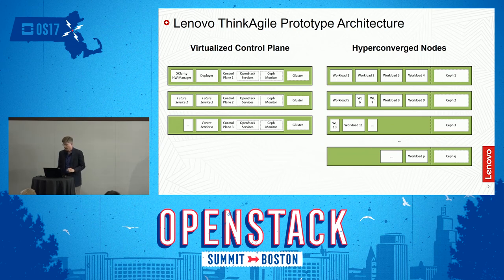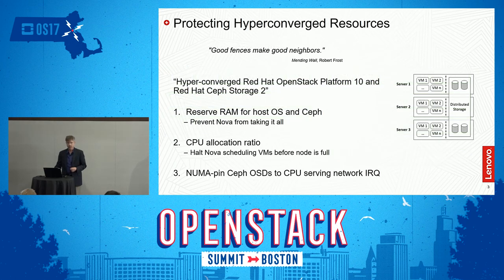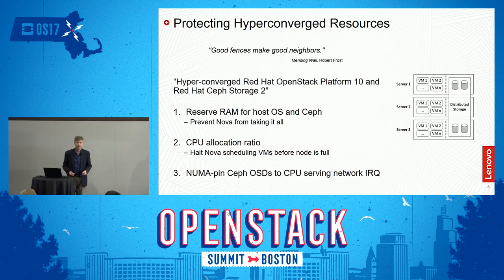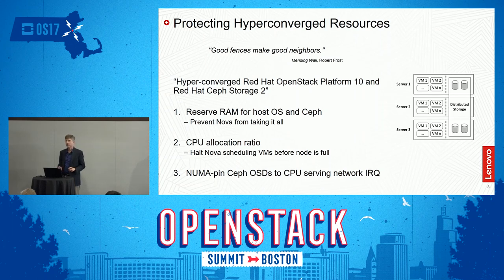It looked roughly like this. Whenever you're working in a hyper-converged environment, it's important to protect the compute from the storage and the storage from the compute — you don't want one to starve the other. We didn't want to reinvent the wheel, so we looked around and found that Red Hat had published a reference architecture describing the best ways to do this, and we adopted that to our configuration.